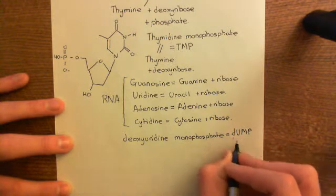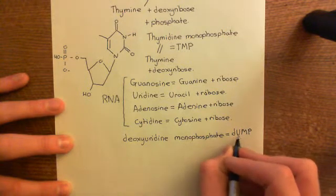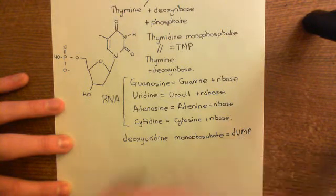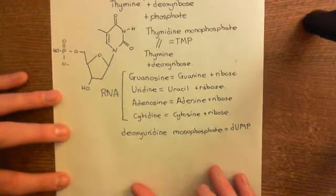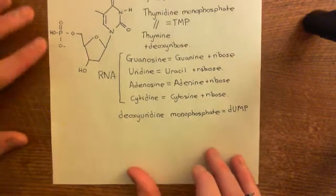The D is for deoxy, U for uracil, M for mono, and P for phosphate — so dUMP.